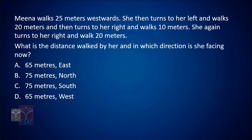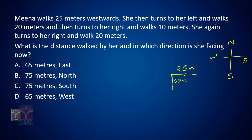Meena walks 25 meters westward, then turns to her left and walks 20 meters, then turns to her right and walks 10 meters, then turns to her right and walks 20 meters. Starting from her origin, she first walks 25 meters west. Turning left from westward means turning south, so she walks 20 meters south. Turning right from south means walking west again, so she walks 10 meters west.